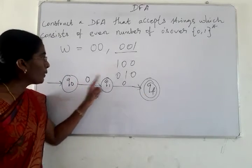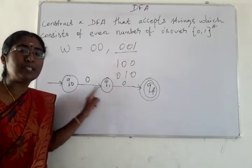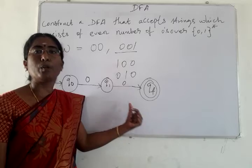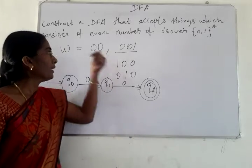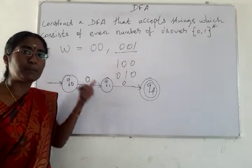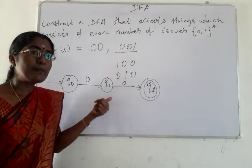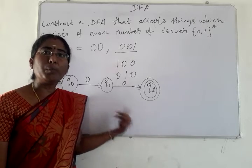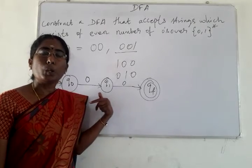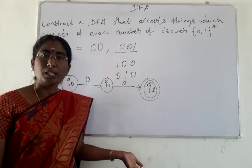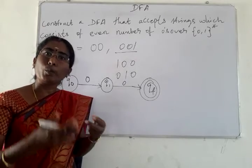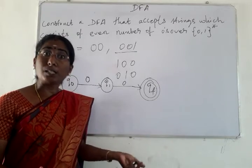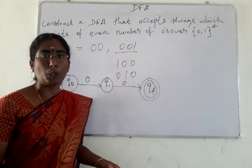This covers the minimum length string '00' accepted by this DFA — an even number of zeros. Next we consider the remaining transitions. The string may consist of an even number of zeros in any sequence, with the zeros appearing at the start, middle, or end of the string. There is no restriction on the position of zeros.